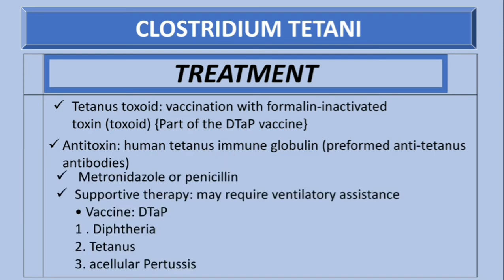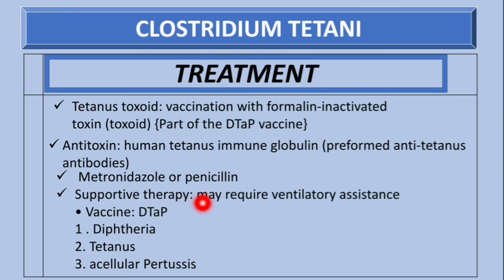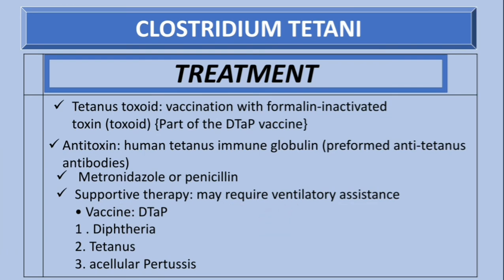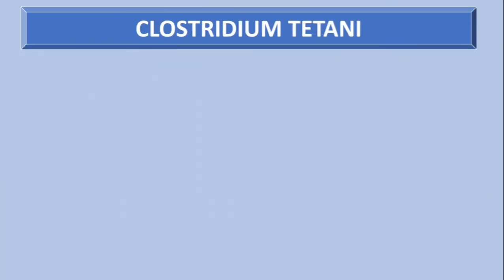Other treatment methods include drugs such as metronidazole or penicillin, and supportive therapy — mainly ventilatory assistance. To clarify, DTaP stands for diphtheria, tetanus, and acellular pertussis.